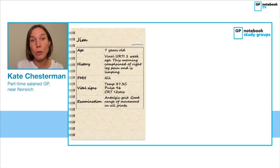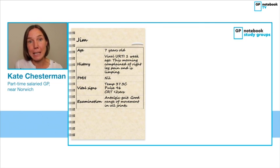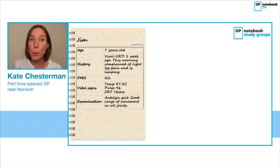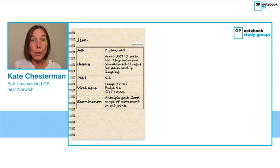This is the case of Jim. Jim is seven years old and he had a viral upper respiratory tract infection about a week ago. This morning he got up and came downstairs complaining of pain in his right leg, and his dad noticed that he was limping. His dad was understandably concerned and brought him along to see you. Examining Jim, his vital signs were all within normal ranges, but he had an antalgic gait — a painful limp — but a normal range of movement in all joints.